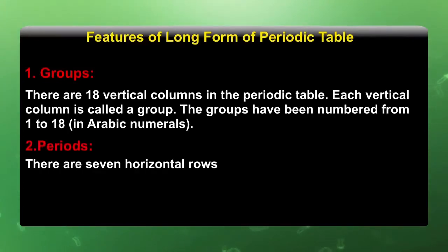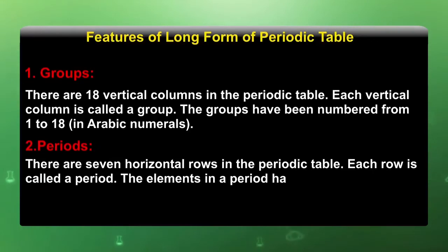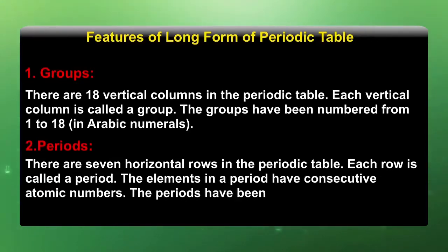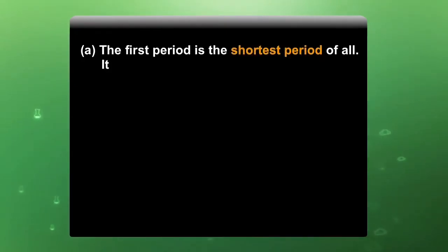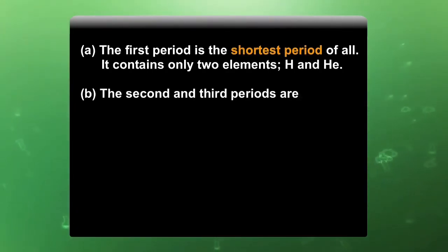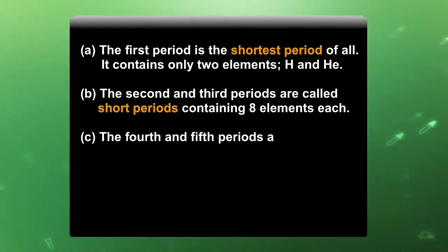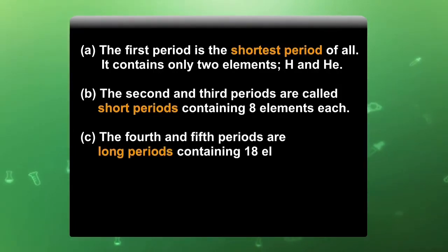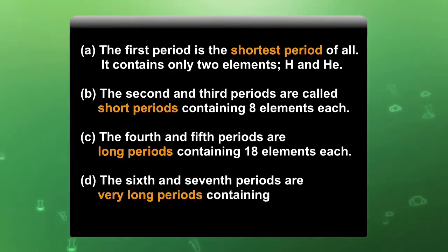There are 7 horizontal rows in the periodic table; each row is called a period. The elements in a period have consecutive atomic numbers. The periods have been numbered from 1 to 7 in Arabic numerals. The first period is the shortest period, containing only two elements: hydrogen and helium. The second and third periods are called short periods, containing 8 elements each. The fourth and fifth periods are long periods containing 18 elements each, and the sixth and seventh periods are very long periods containing 32 elements each.